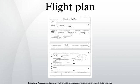Flight plans are documents filed by a pilot or flight dispatcher with the local Civil Aviation Authority prior to departure, which indicate the plane's planned route or flight path. Flight plan format is specified in ICAO Doc 4444. They generally include basic information such as departure and arrival points, estimated time en route, and alternate airports in case of bad weather.